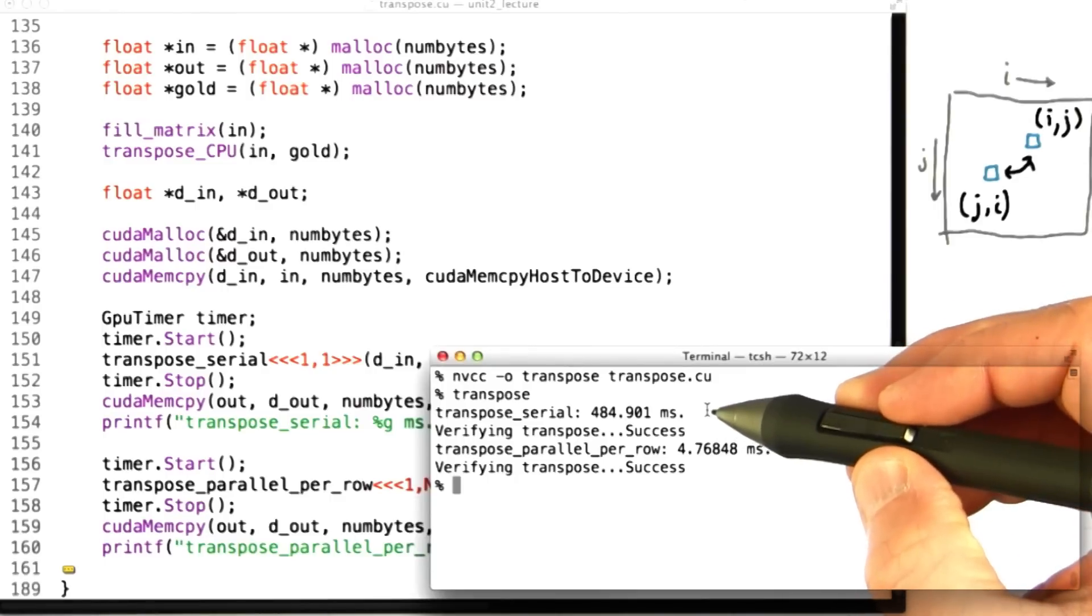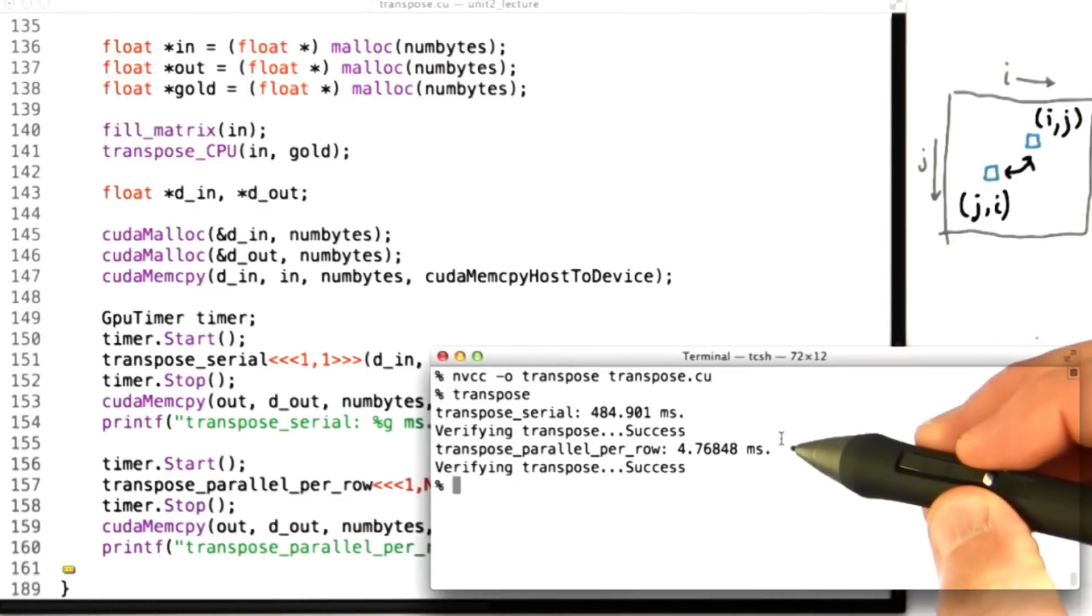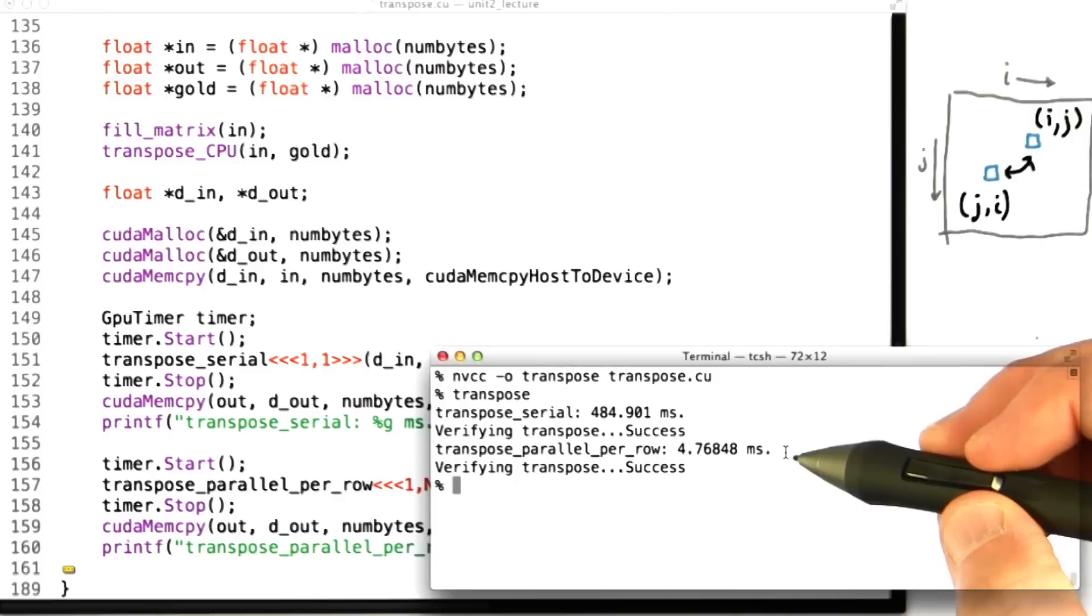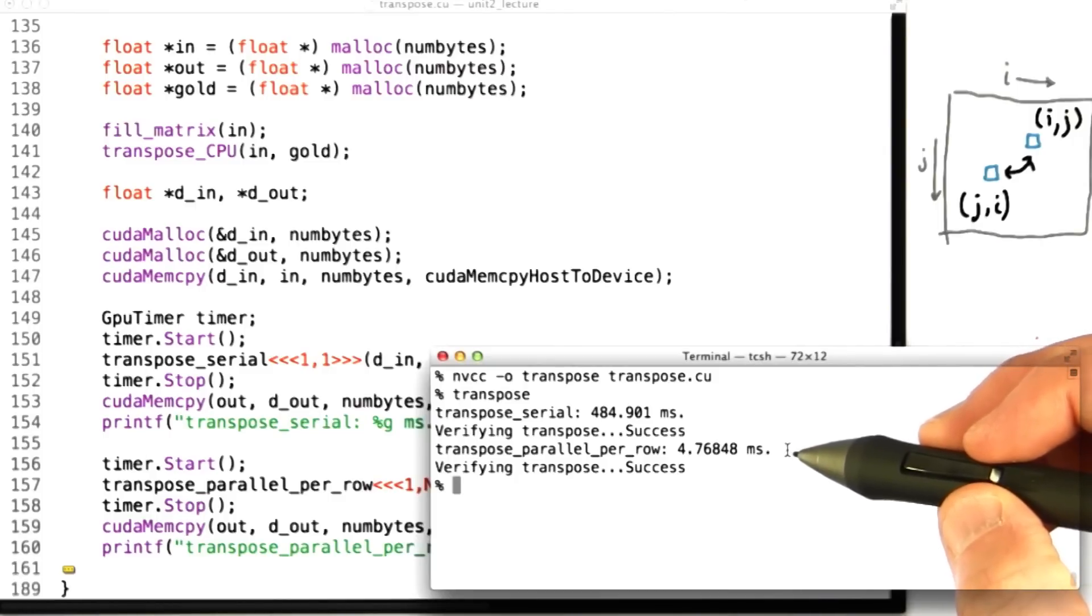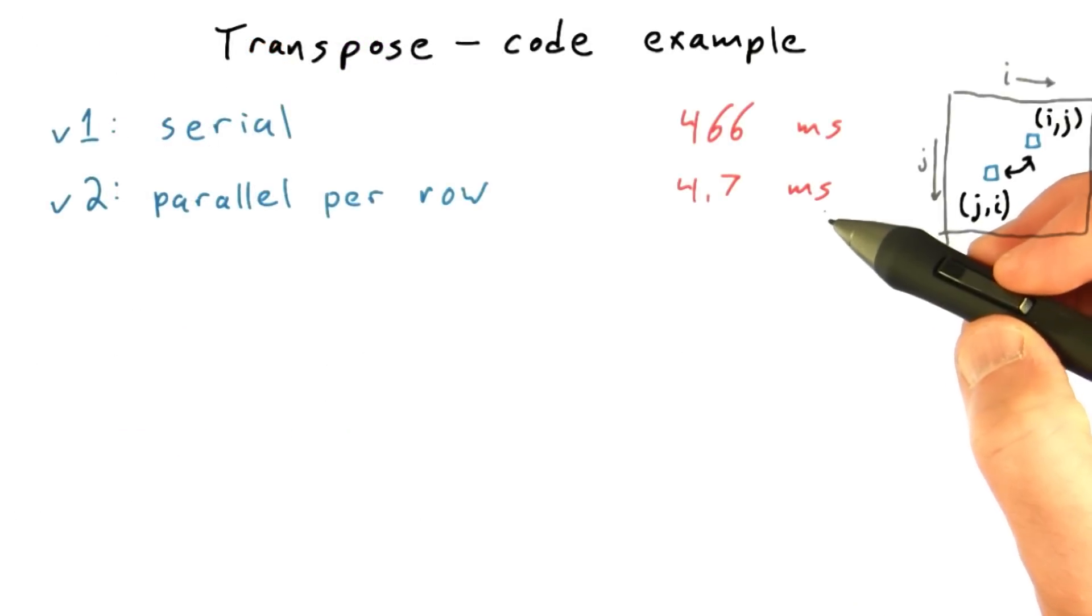Okay, transpose_serial ran 484 milliseconds again, roughly what we saw before. Transpose_parallel_per_row is running in 4.7 milliseconds. So obviously we're making a huge improvement by parallelizing this just across the threads of a single thread block. So let's note that down. 4.7 milliseconds.